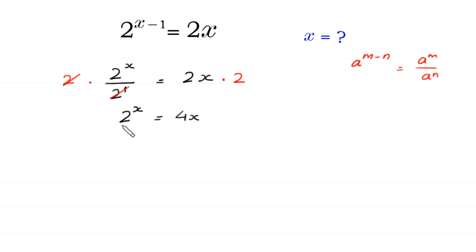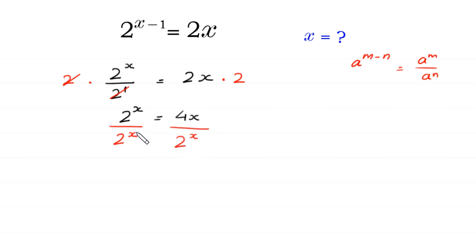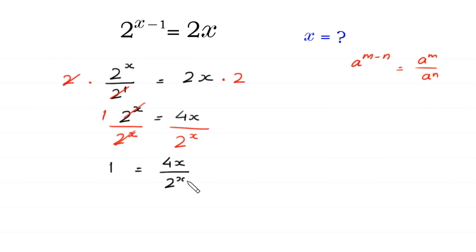Now from here we divide both sides of this equation by 2 to the power x. At the right side we divide by 2 to the power x, so this 2 to the power x will be cancelled, and at the left side we are left with 1. So 1 is equal to 4 times x over 2 to the power x.